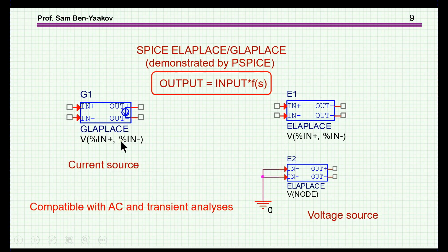To do that, we can use the built-in analog behavioral model that SPICE has, which is the G Laplace or E Laplace. The difference between these two is that the G Laplace has an output of a current source, while the E Laplace has an output of a voltage source. It's just a question of what's the nature of the output terminal.